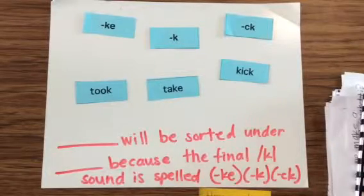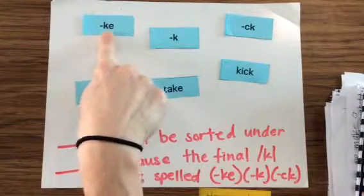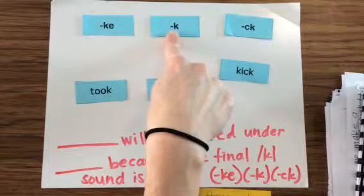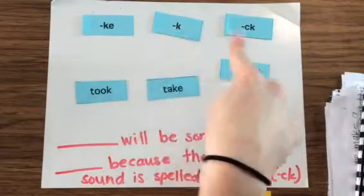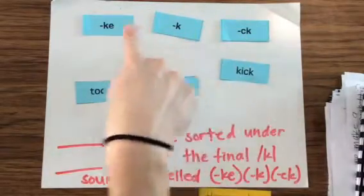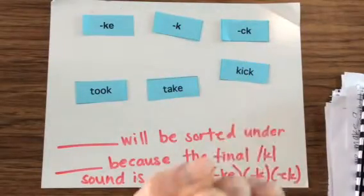So the sort features are k-e, and that would be at the end of the word. It would be just k, or we also have the ending spelled c-k. All of these spelling patterns make the k sound.